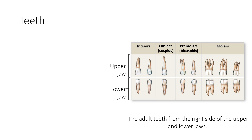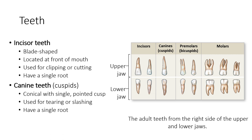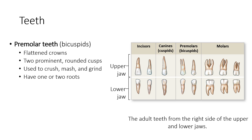Here you can see the adult teeth from the right side of the upper and lower jaws. Incisor teeth are blade-shaped, located at the front of the mouth, used for clipping or cutting, and have a single root. Canine teeth, also known as cuspids, are conical with a single point or cusp, used for tearing or slashing, and have a single root. Premolar teeth, also known as bicuspids, have flattened crowns with two prominent cusps, used to crush, mash and grind, and have one or two roots.